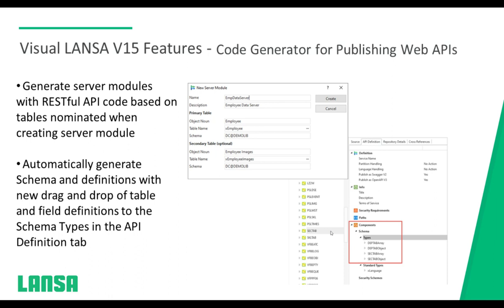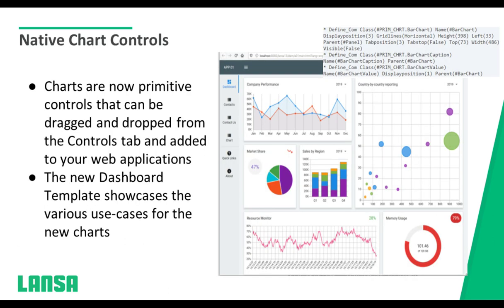If a connector isn't there or you don't want to wait, we still offer a super easy way to create APIs. As shown earlier, you generate the server module with REST API code based on the tables you nominated when you created that server module — then it's a matter of opening that server module and dragging and dropping the fields that will be in your API schema. You have now created an API with no code. That is a great feature and a great time saver.